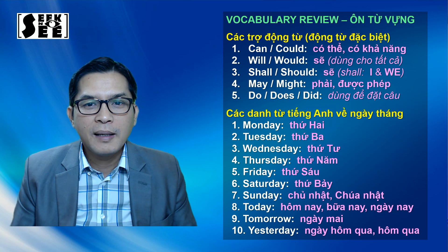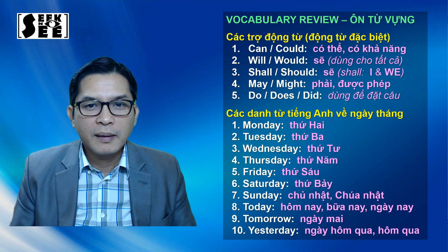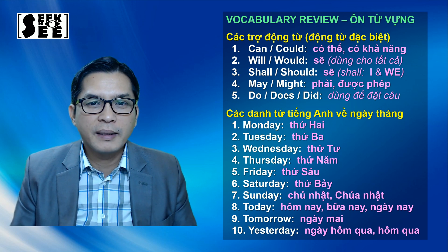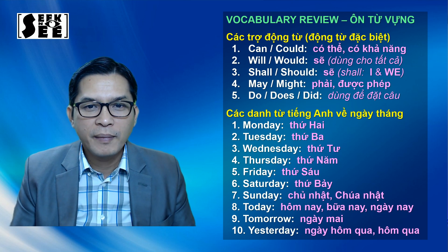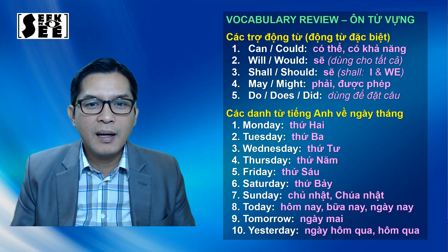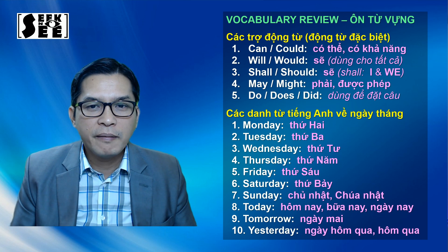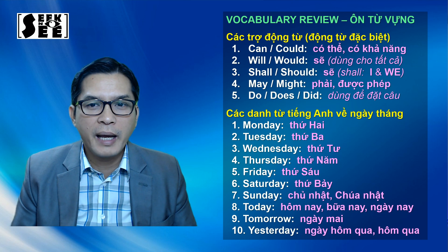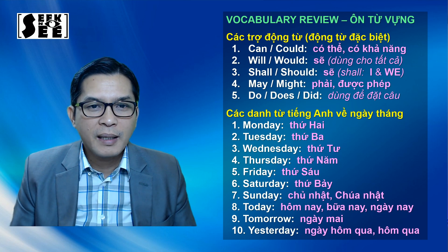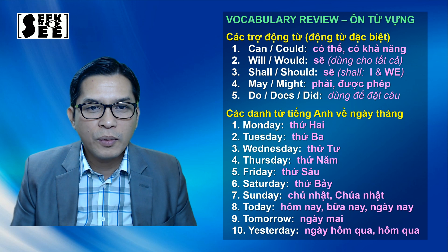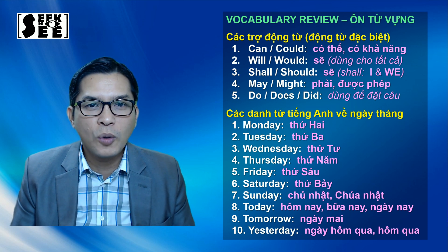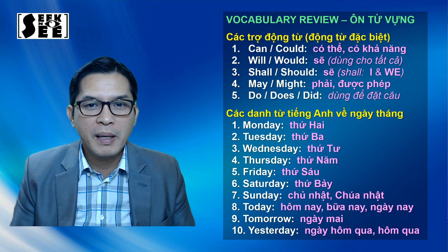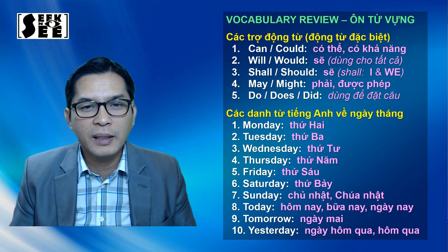Trước hết thì chúng ta sẽ ôn từ vựng những trợ động từ ở trong tiếng Anh mà chúng ta còn gọi là những động từ đặc biệt. Trước hết thì chúng ta có động từ can và could, có nghĩa là có thể, có khả năng. Những trợ động từ này khi chúng ta đặt câu sẽ còn có những cái nghĩa cụ thể theo từng văn cảnh. Bây giờ chúng ta chỉ ôn từ vựng để nhớ cách phát âm và nghĩa của những từ này.